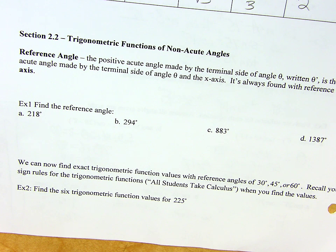Reference angle, the positive acute angle made by the terminal side of angle theta, written theta prime, is the positive acute angle made by the terminal side of angle theta and the x-axis. It's always found with reference to the x-axis. Okay, what in the world?